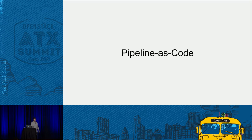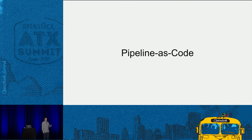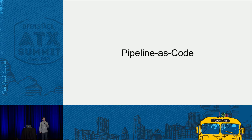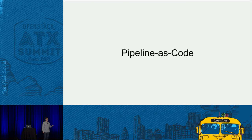Pipeline as code. Let's take this up a notch. What I'm going to put into Jenkins right now is pipeline as code. What is pipeline as code? It's just another microservice. So let's make our pipeline a microservice, version it, and build, test, deploy. We want to make this really lightweight.